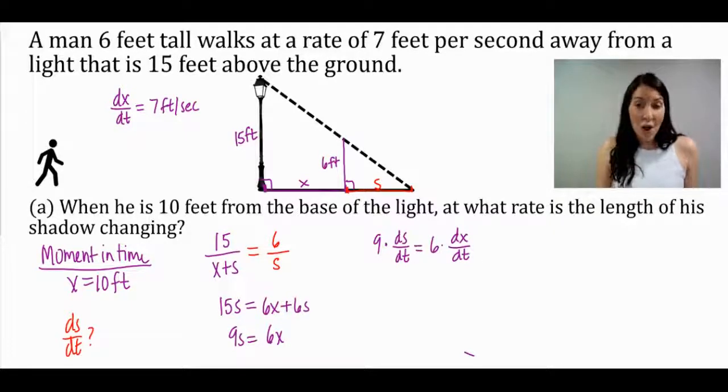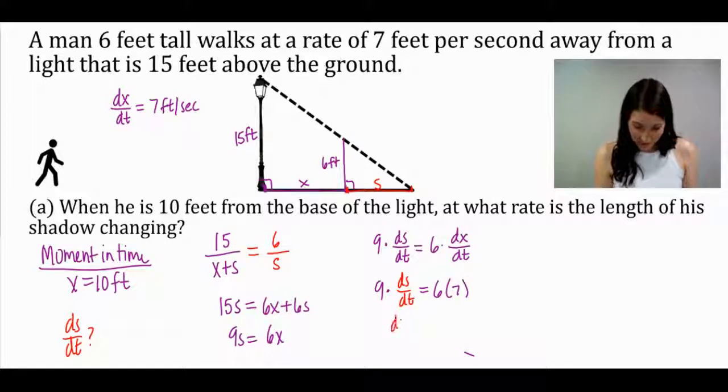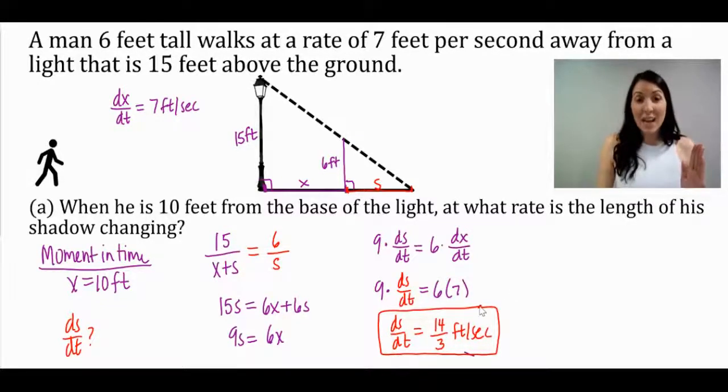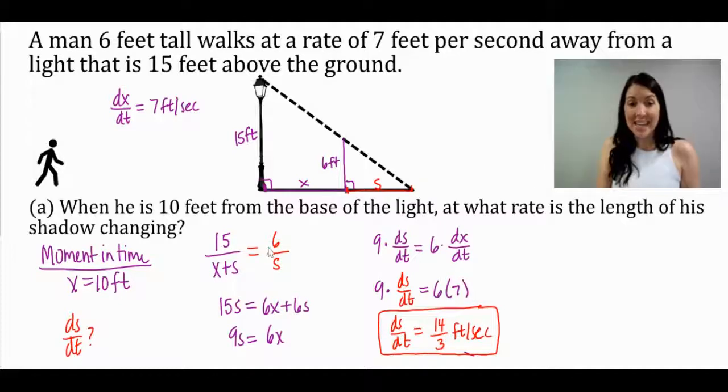What do we know? We know that dx/dt was in the problem, that was 7. So 9 times ds/dt, that's what I'm looking for, equals 6 times 7. That equals 42, and I divide it by 9. Therefore, ds/dt is 14 thirds, and we always want to put a unit on that, and that would be feet per second. So what does this even mean? This means when he is the moment 10 feet from the light post, his shadow is increasing at a rate of 14 thirds feet per second when he is 10 feet from the light post.